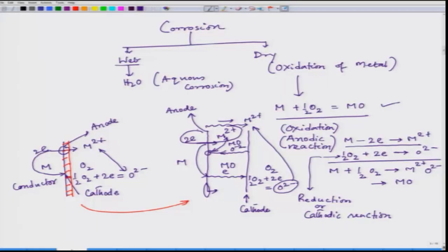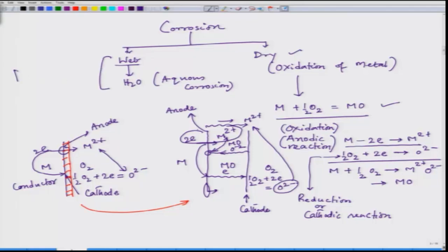But here we do not have moisture, so that means it is dry corrosion. That is what we have come to understand: the condition of dry corrosion involves oxidation. If we have time we would definitely look into oxidation of metal in a little more depth, but our primary interest would be on aqueous corrosion. We will concentrate more on this in our present set of lectures.